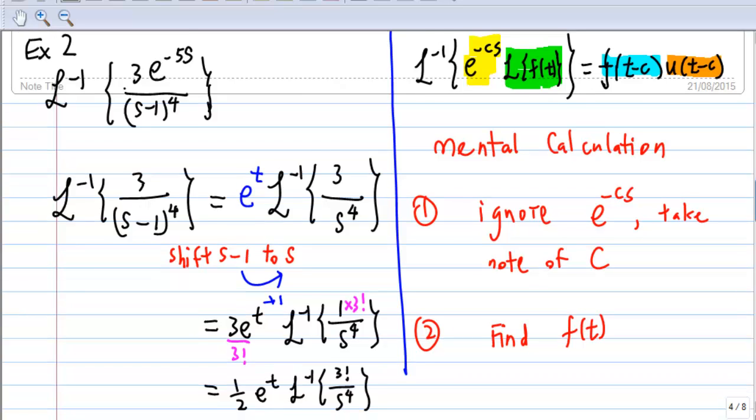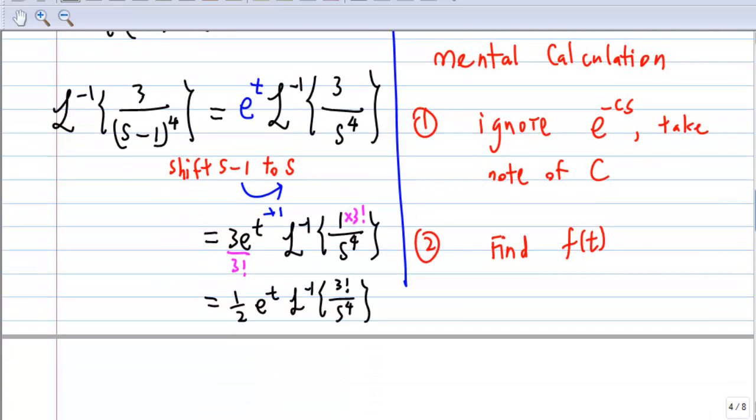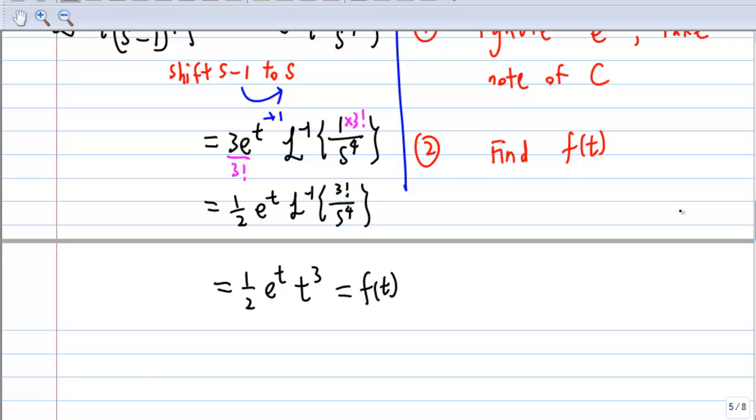This is t power 3. So this is equal to 1/2 e power t, t power 3. And this is our f(t). So that means that f(t) is equal to 1/2 e power t, t power 3.